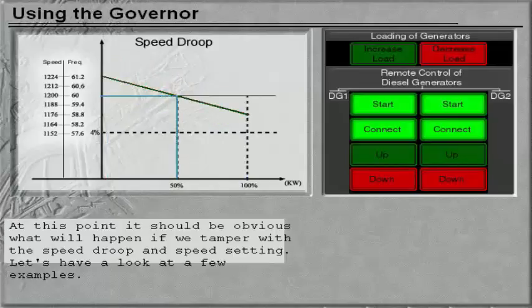At this point, it should be obvious what will happen if we tamper with the speed droop and speed setting. Let's have a look at a few examples.